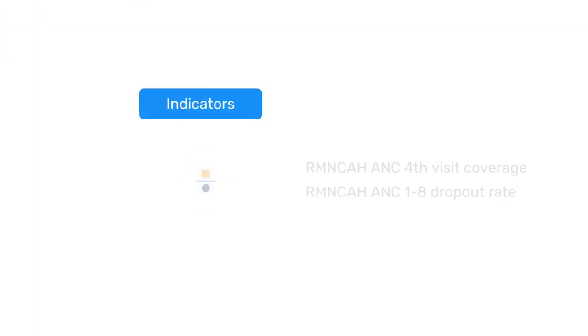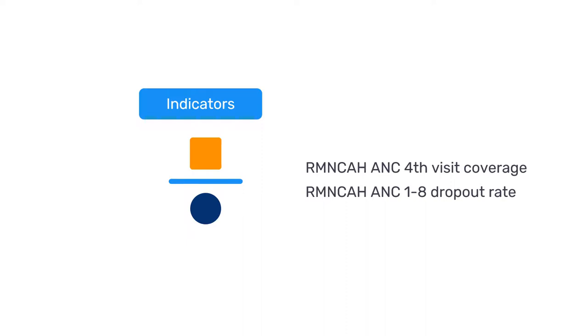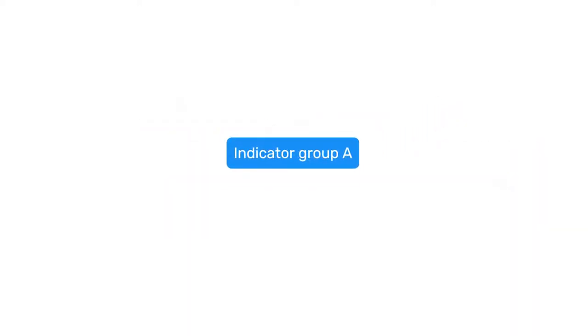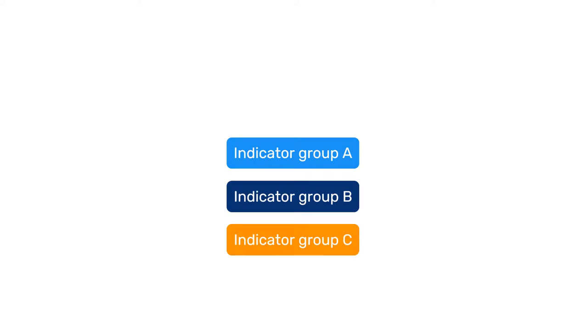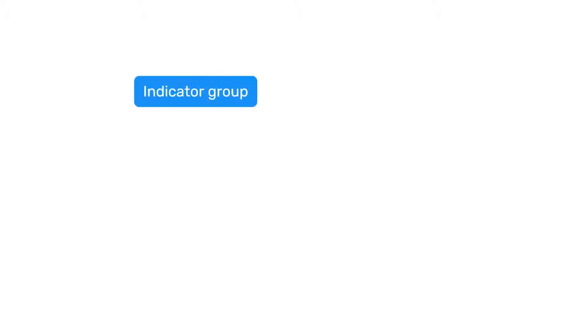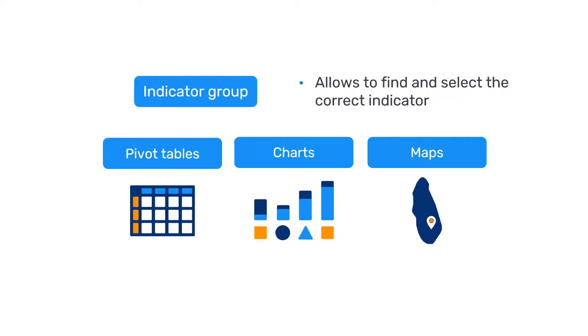Once our indicators are configured, we can add them to indicator groups which are used to group together related indicators. Indicator groups can then be added to indicator group sets which group together related indicator groups. Similar to data element groups, a benefit of indicator groups is that they allow us to find and select the correct indicators in analytics applications more easily.